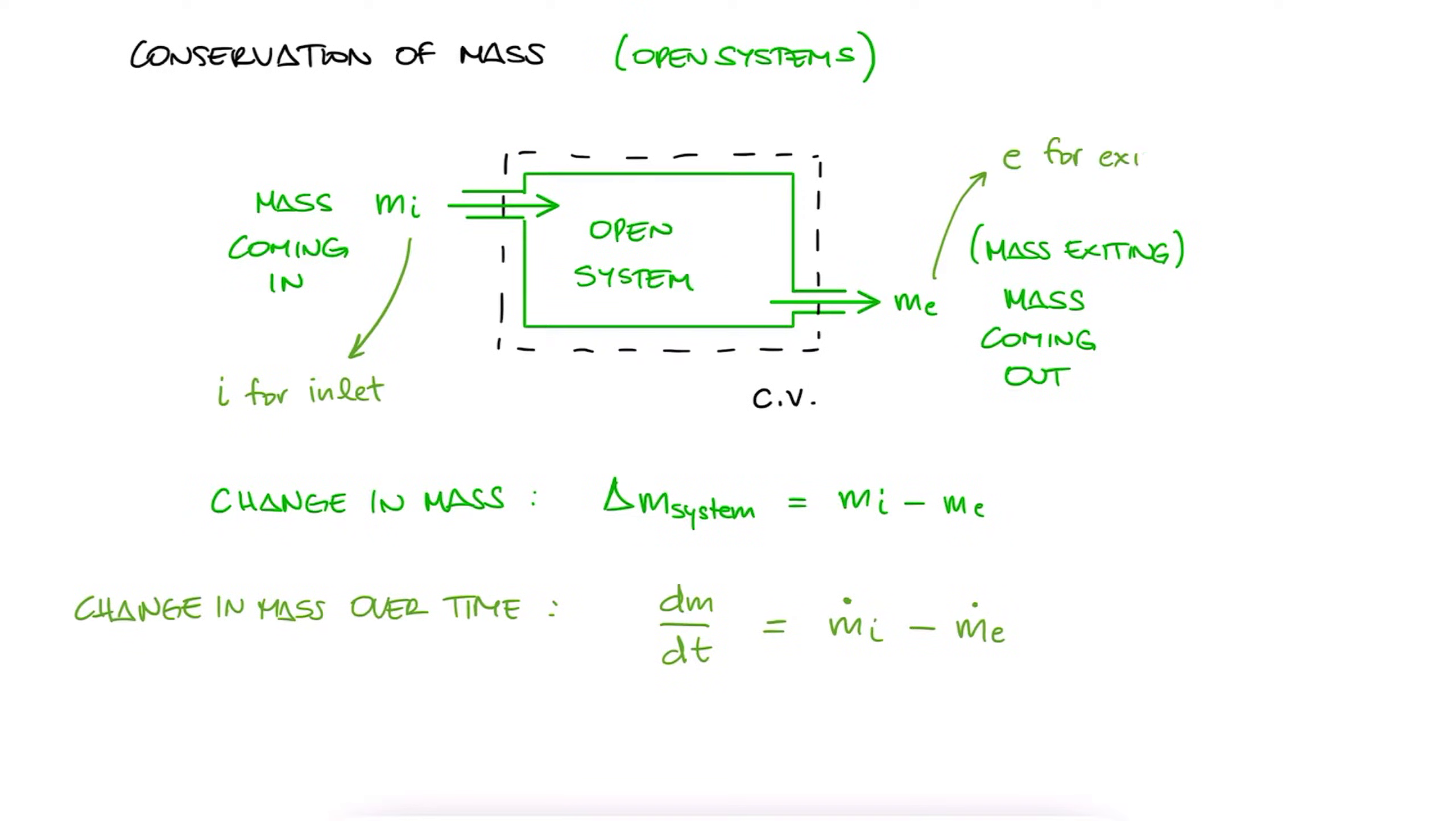As explained in one of the first few lectures, the dot refers to the rate of that variable over time. And if we have multiple inlets and outlets in our system, we would write this expression as dM/dt equal to the sum of Mi dot minus the sum of Me dot.